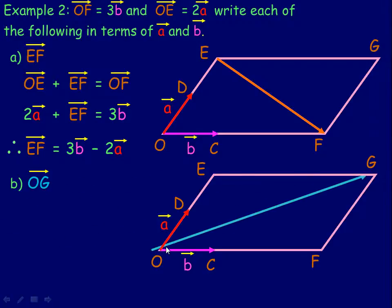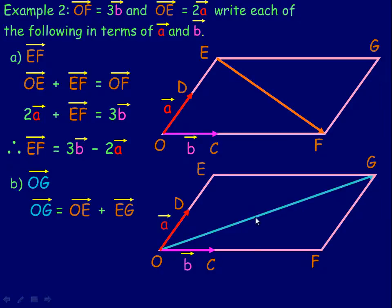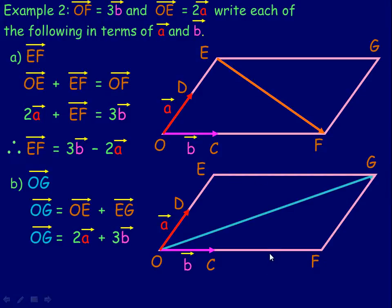For vector OG — the other diagonal — I'll use the triangle on top: vector OE plus EG equals vector OG. OE is twice vector a. Since the opposite sides of a parallelogram are parallel and the same length, EG and OF are equal vectors, so EG equals 3b. Therefore OG equals twice a plus 3b.